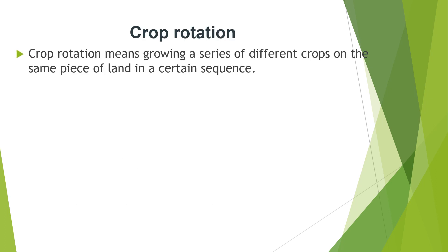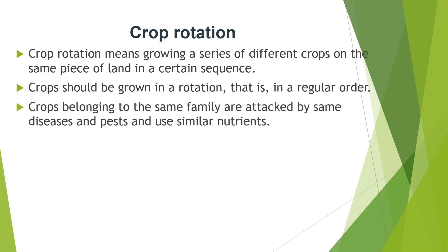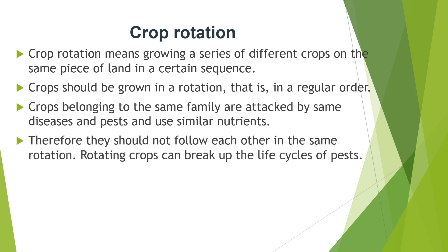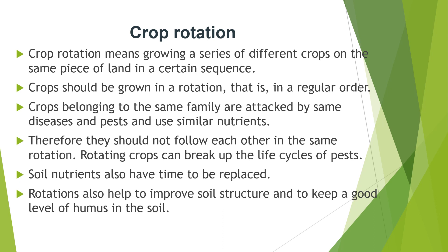Crop rotation means growing a series of different crops on the same piece of land in a certain sequence. Crops should be grown in rotation, that is, in a regular order. Crops belonging to the same family are attacked by the same diseases and pests and use similar nutrients, therefore they should not follow each other in the same rotation. Rotating crops can break up the life cycles of pests, soil nutrients have time to be replaced, and rotations help improve soil structure and maintain a good level of humus in the soil.